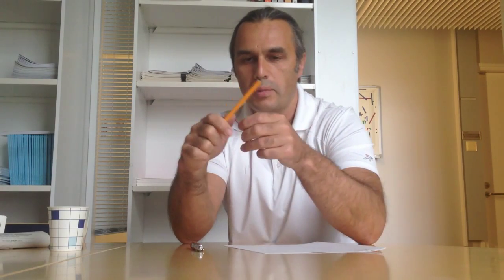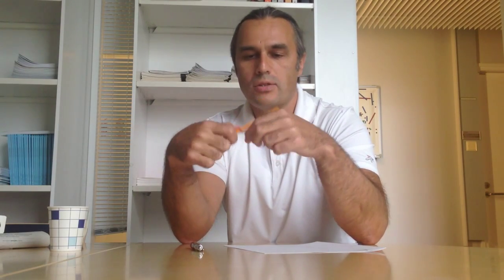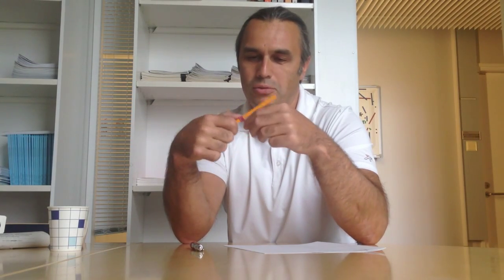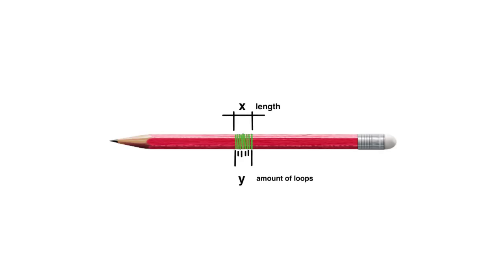Thinking a bit longer and applying the same principle, you can simply take the wire and make — I don't know — maybe 10 winds. Then measure the total length of this with a regular ruler, and then divide it by the number of loops. The accuracy of the measurement will be much higher, of course.